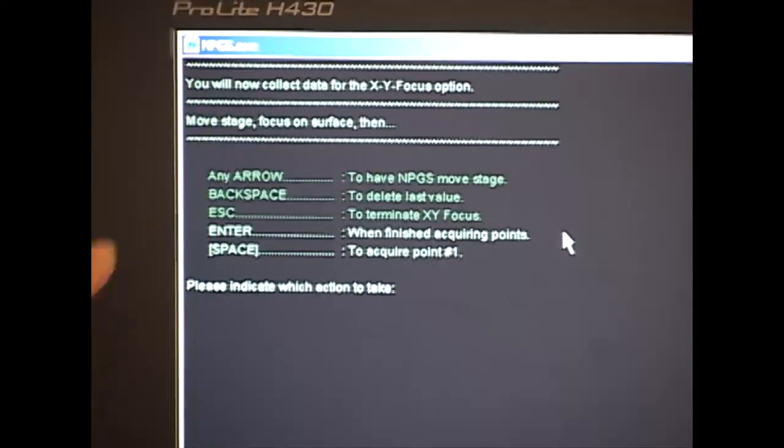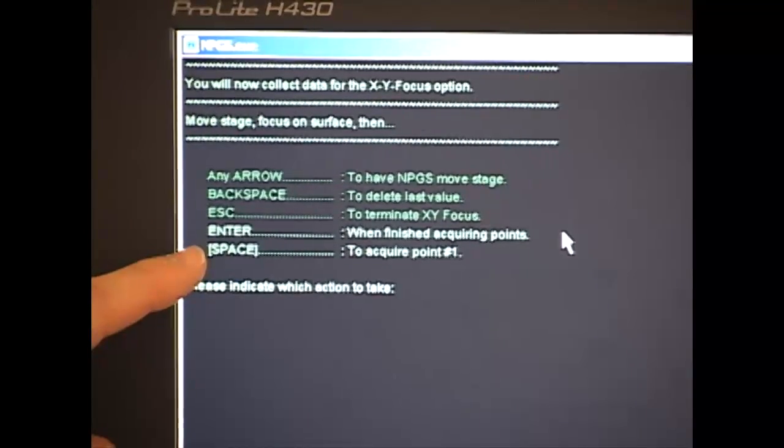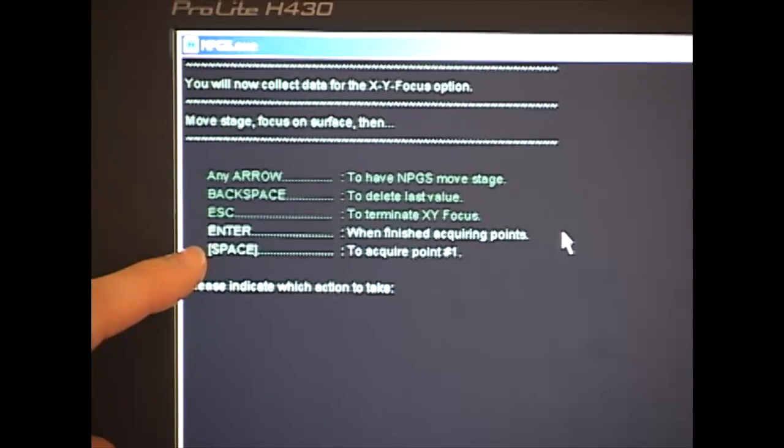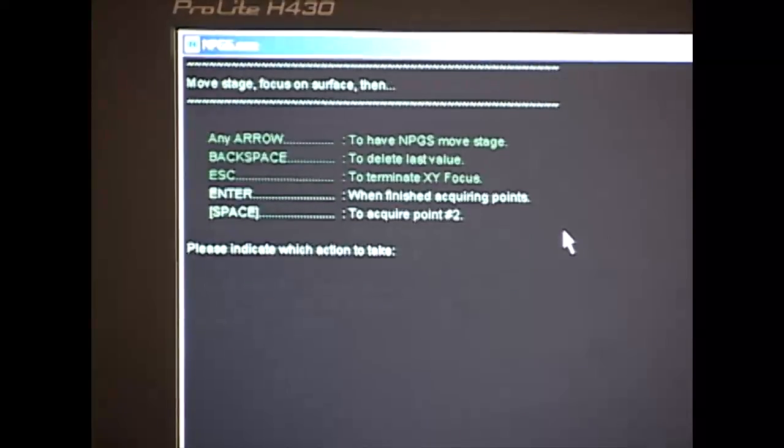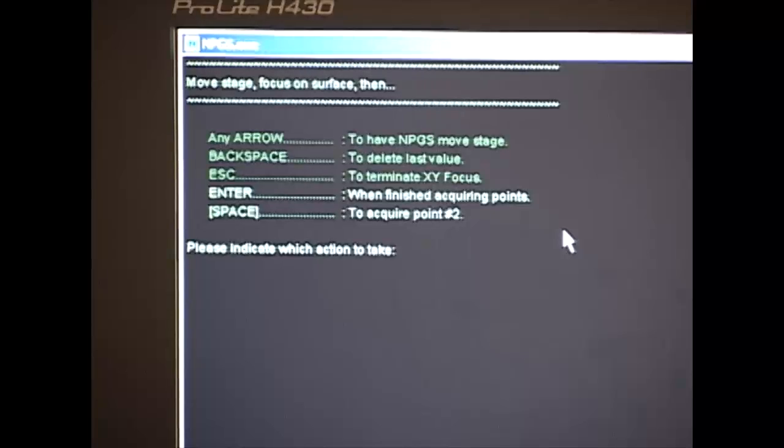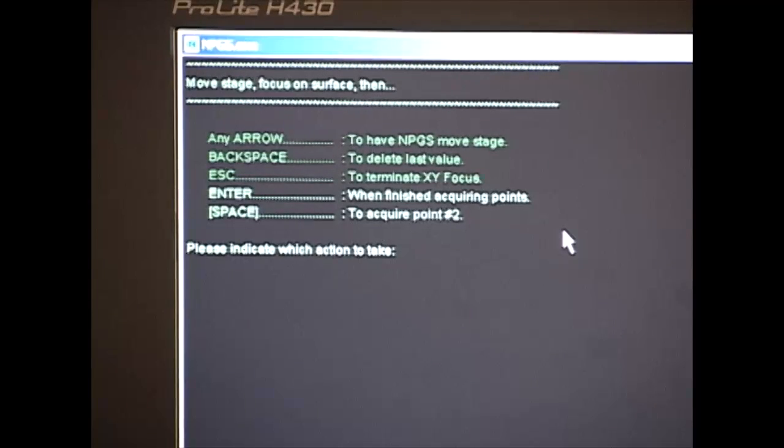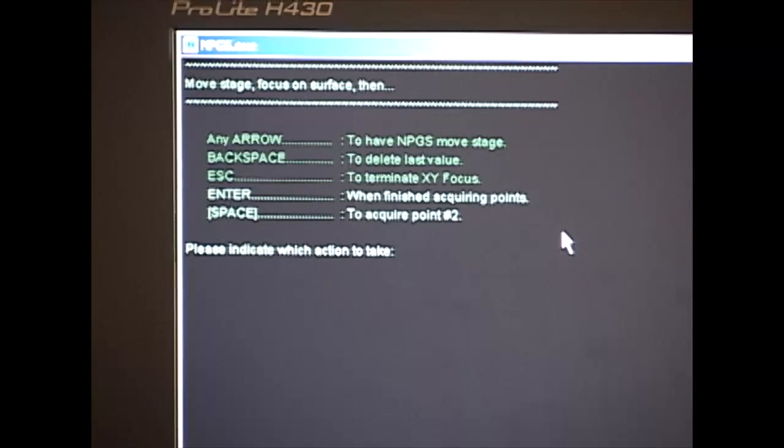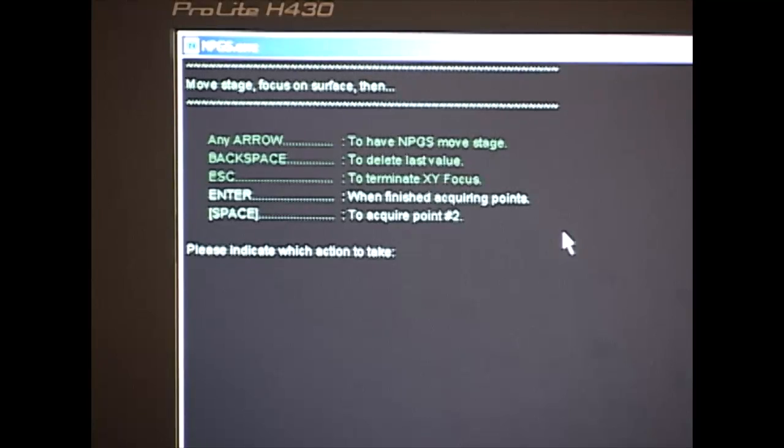I'm going to hit enter to acquire new data. And I've already focused point number one, so I'm going to hit space to acquire point number one. And very briefly it read 6.39 millimeters, the distance from the lens where the electron beam exits to the surface of the resist sample. Now it prompts to acquire point number two.